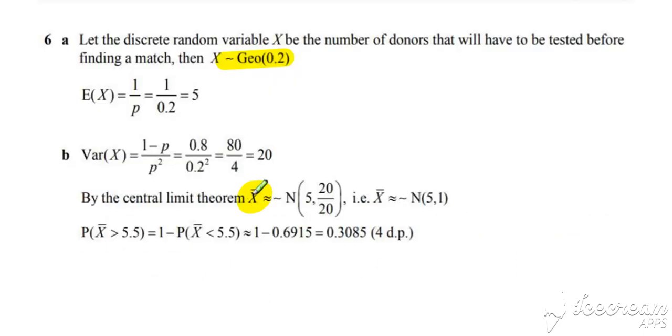To find the distribution of X-bar, we know the expected value of X from part A, but we need the variance of X. The variance of any geometric is (1-p)/p². We get Var(X), then divide by n (our sample size) to get Var(X-bar). Under the central limit theorem, X-bar approximates a normal distribution with mean 5 and variance 1.